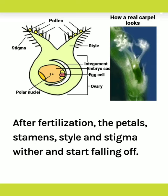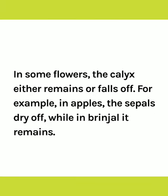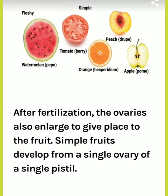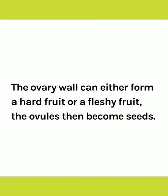Now let's see what happens after fertilization. After fertilization, the petals, stamens, style, and stigma wither and start falling off. The calyx may either fall off or may remain intact in a dried and shriveled form. The ovary enlarges to form fruit, with the ovarian wall forming the fruit wall. The ovary wall may either form a dry and hard fruit wall or a fleshy fruit wall.